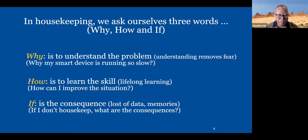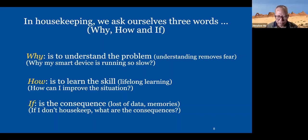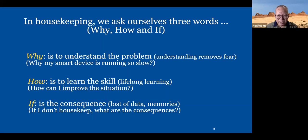How can you improve the situation? The last one is important: 'If' — the consequence. If you just don't do what is advised or don't even know what you need to do, the consequence is you may lose your data, you may lose your memories — all the photos in the smartphone, 1,000 or 2,000 or 3,000 of them — you may just lose every one of them. So these are the three things I revolve around to make you aware that you need to do something yourself.